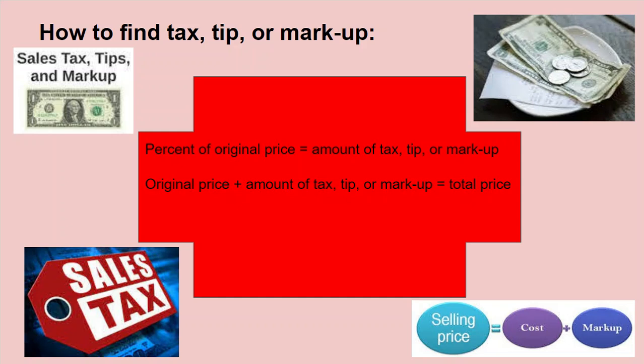The next thing is how to find tax, tip, or markup. Tax, tip, and markup are all done the same way: you find the percent of the original price, and that gives you the amount of tax, tip, or markup. Then you take the original price and add that amount to get the total price. The difference from discount is that we add instead of subtract.